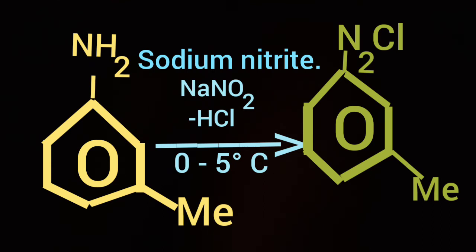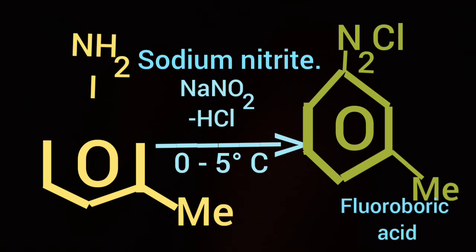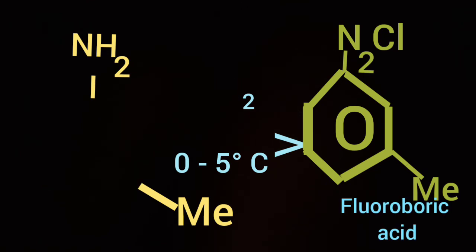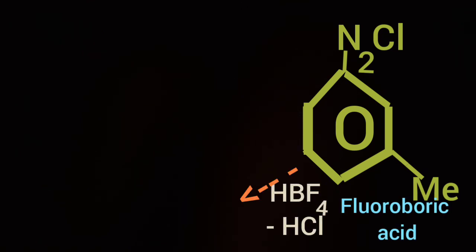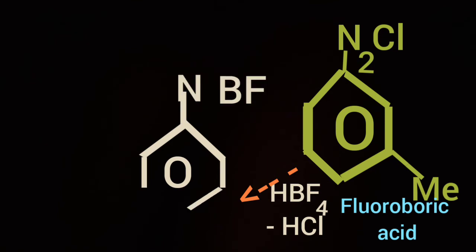The compound so obtained is treated with fluoroboric acid HBF4, then the diazonium chloride part of the compound is converted to diazonium fluoroborate as shown on the screen.